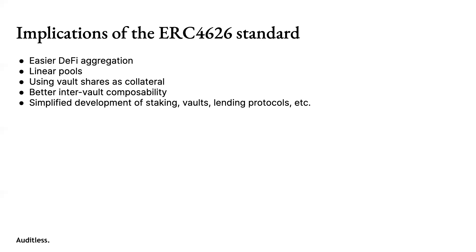You can also use vaults as collateral. When you create a lending protocol you need an oracle for collateral. Each ERC-4626 vault effectively builds in its own oracle via the `convert` functions — from shares to assets and back. So as long as you have an oracle for the underlying asset, you get an oracle for the vault share for free. You can also have better inter-vault composability, where vaults build on other vaults very easily, and you can simplify development of staking vaults and lending protocols.